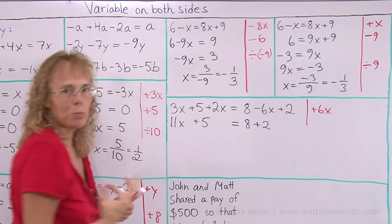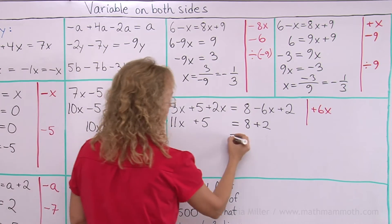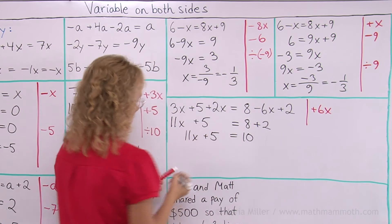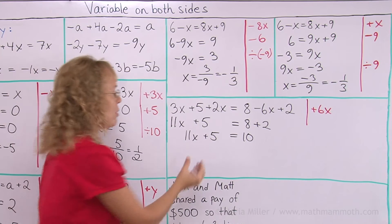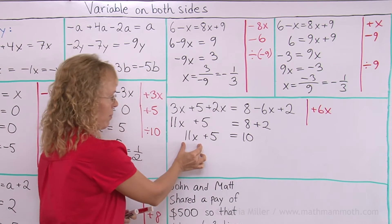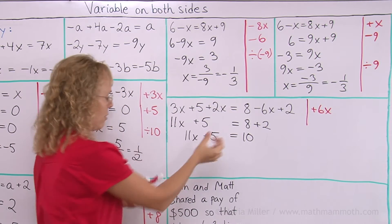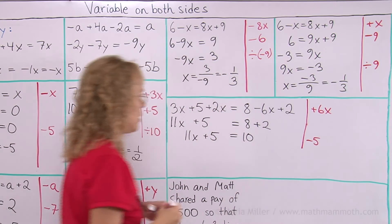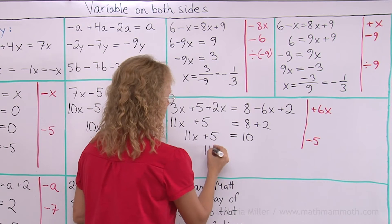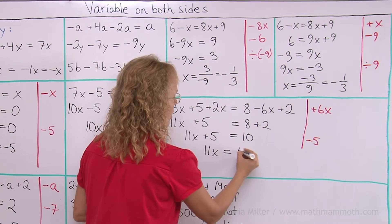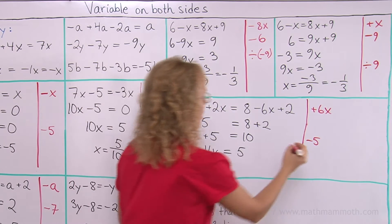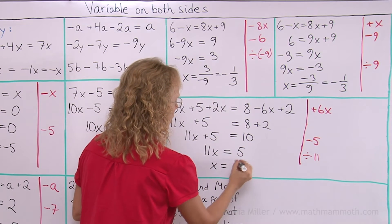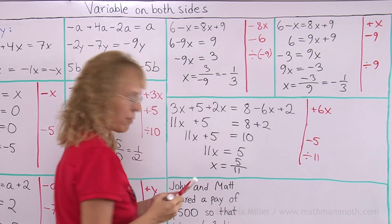And then, of course, 8 plus 2, I will simplify that too, so I get 10 here, 11x plus 5. And now I want to isolate x on this side. I want to have the term with x alone, so I get rid of the plus 5. Subtract 5 at this stage, leaves 11x here and 5 here, and lastly we divide again by 11. And then we get x equals 5 over 11, the fraction.